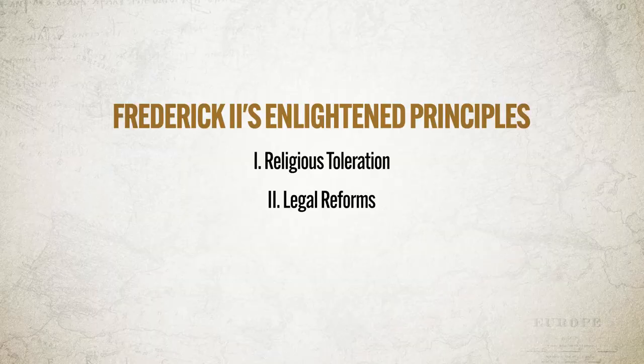Third, Frederick engaged in bureaucratic reform, and for that he adopted the German principles of Cameralism. These principles argued that monarchy is the most effective form of government, and thus all elements of the state and society ought to be subservient to the monarch. However, the state had the responsibility not to be power-hungry and instead use its power for the betterment of society.